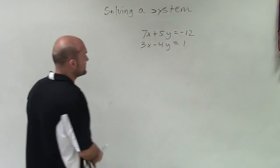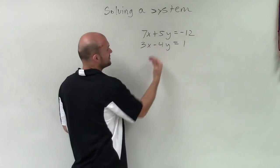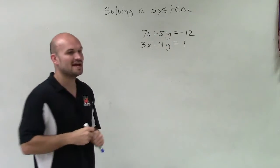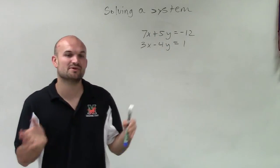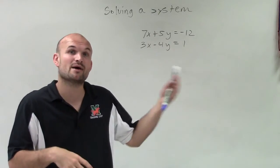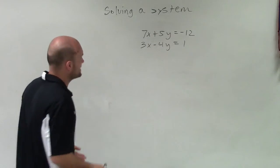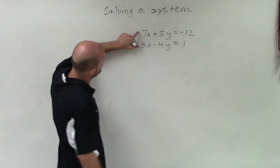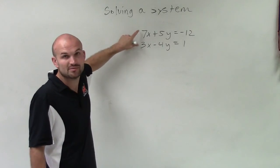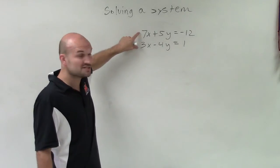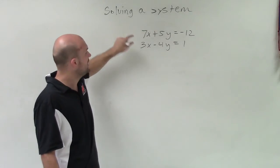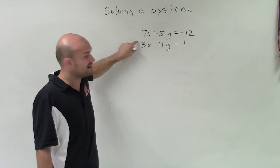So now what we need to do is determine how am I going to get these coefficients to be the same? Previously, we've worked with a lot of equations where we only had to multiply a multiplier by one equation. In this case, I noticed that the least common multiple between 7 and 3 is neither 7 nor 3, but it's actually 21. So to get to 21, I would have to multiply the top equation by 3 and the bottom equation by 7.